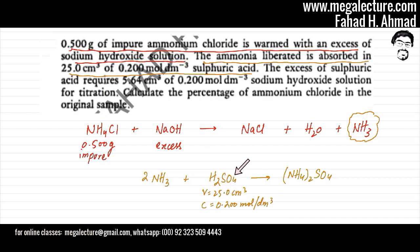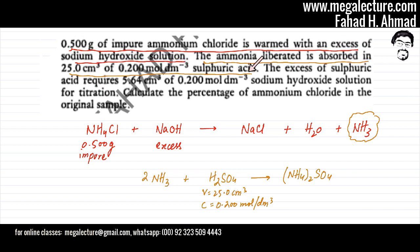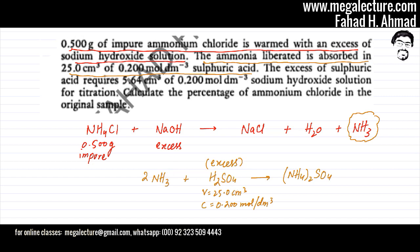I can find the moles of sulfuric acid because I'm given volume and concentration. But remember, the ammonia liberated is being absorbed in sulfuric acid, and this sulfuric acid is in excess. So there would be leftover sulfuric acid at the end of the reaction — ammonia does not completely react with all the sulfuric acid.